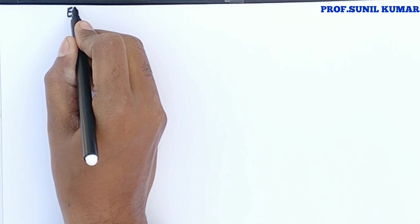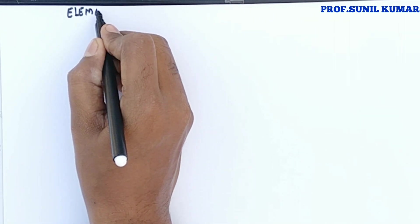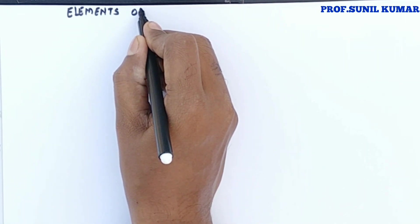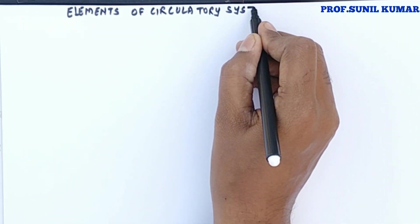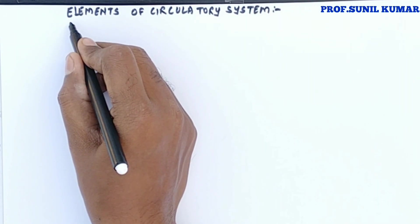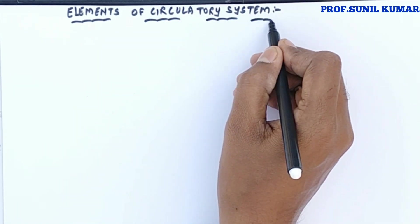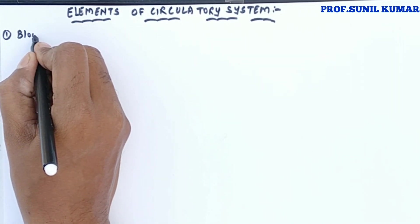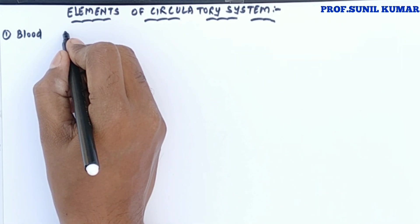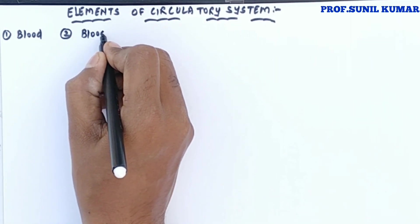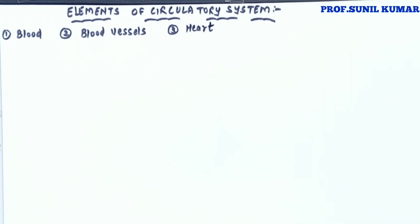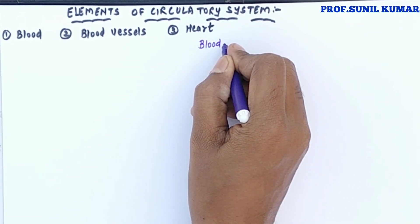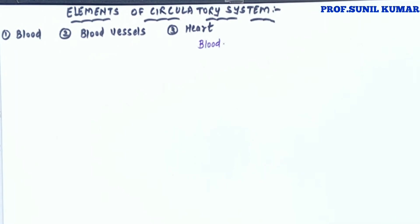In this video I will be talking about the elements of the circulatory system. There are three main elements: first is the blood, second is blood vessels, and third is the heart. For blood, I will discuss all its components. For blood vessels, we need to understand arteries, veins, and capillaries. For the heart, we need to understand the entire structure and pumping mechanism.